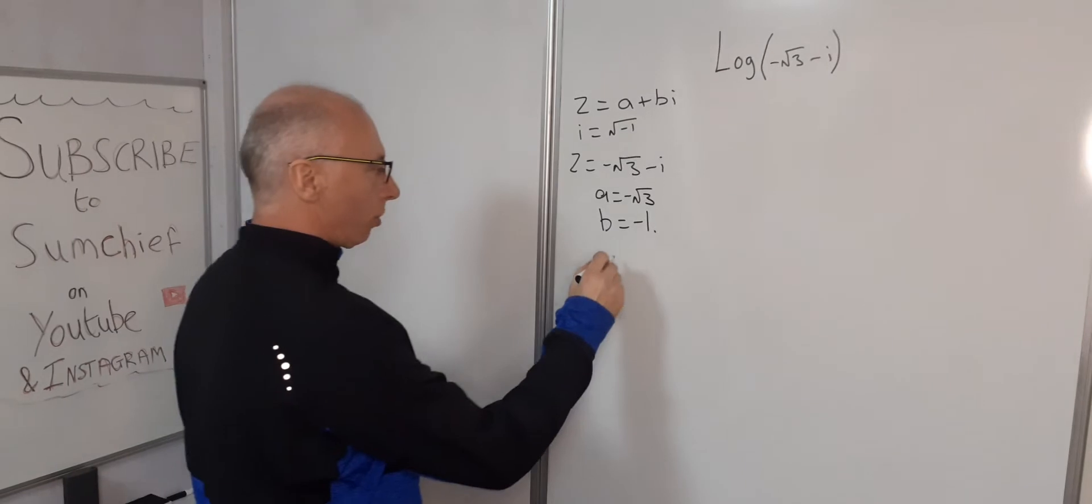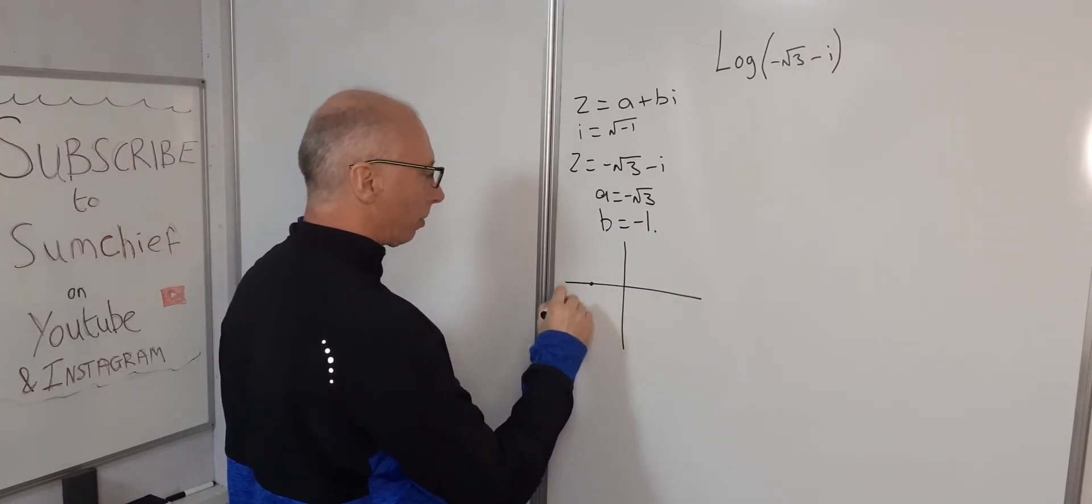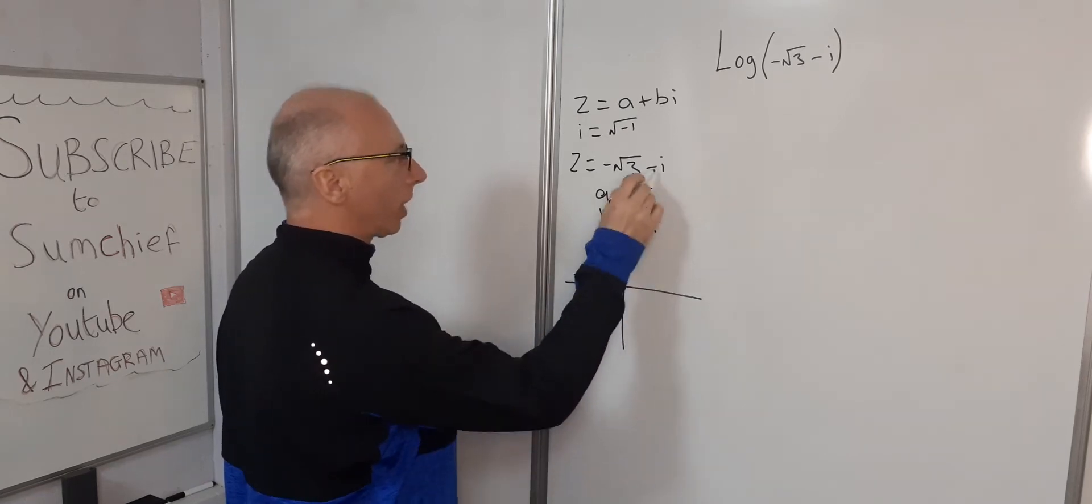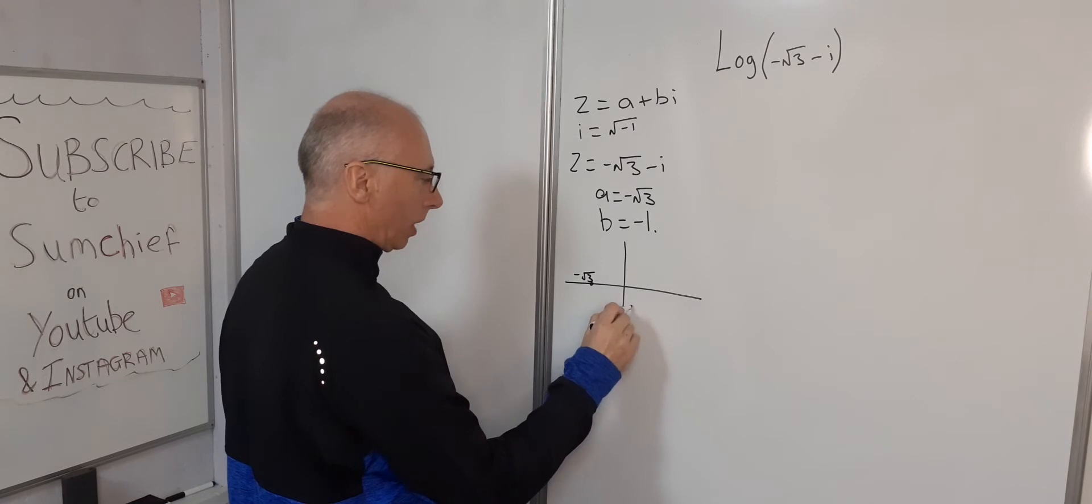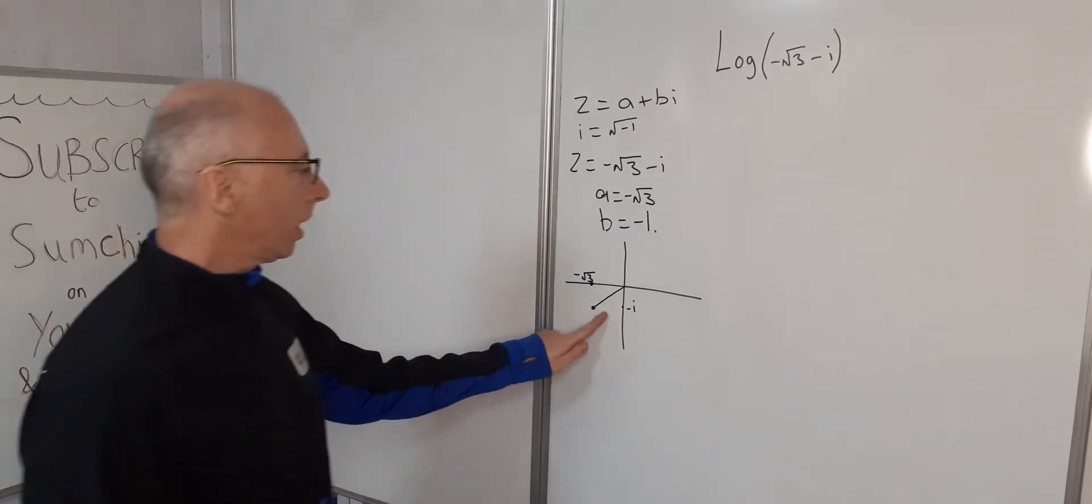Let's just draw that quickly on the diagram. So negative root 3, that's the real component. And negative 1 or negative i, it'll be negative i. So our point on the Argand diagram is going to be here.